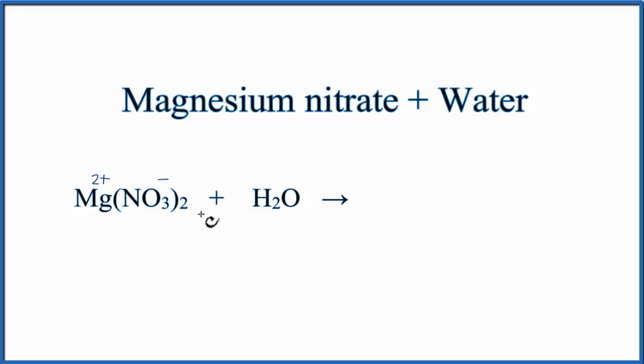So we take solid Mg(NO3)2 and we put it in water, and it dissolves, and it dissolves into its ions. We have Mg2+ plus the nitrate ion.